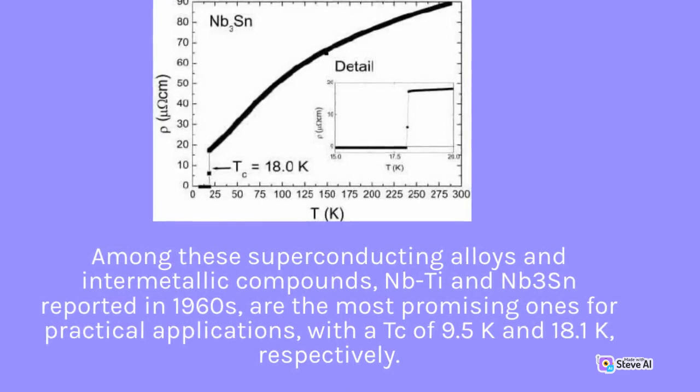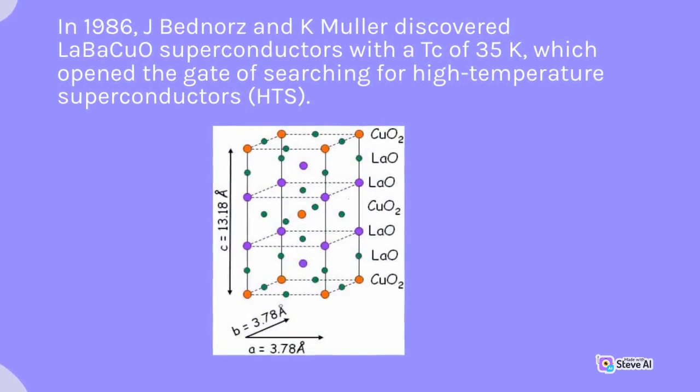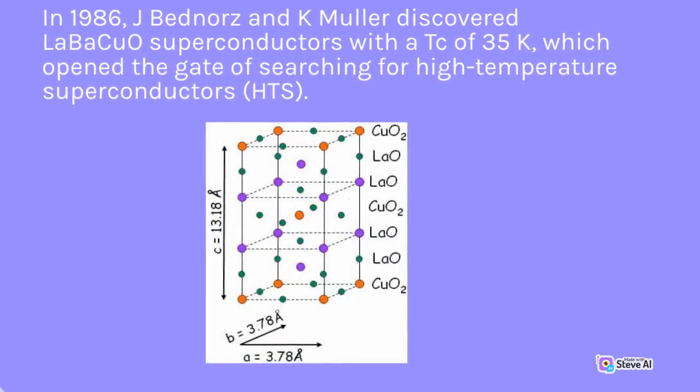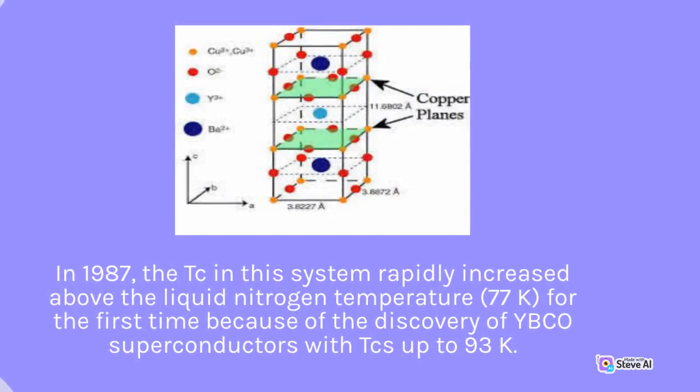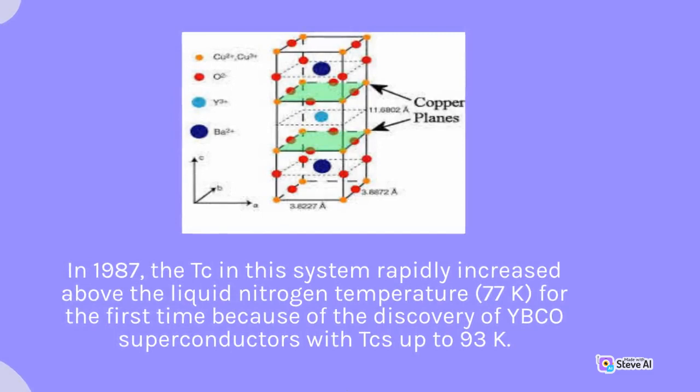In 1986, J. Bednorz and K. Müller discovered LBCO superconductors with a Tc of 35 K, which opened the gate of searching for high-temperature superconductors (HTS). In 1987, the Tc in this system rapidly increased above the liquid nitrogen temperature (77 K) for the first time, because of the discovery of YBCO superconductors with Tc's up to 93 K.